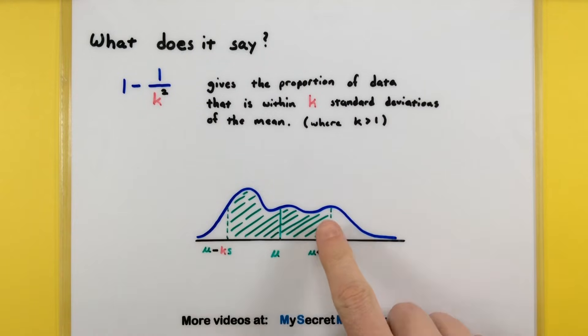So you could have some sort of distribution, doesn't have to be normal or anything like that, could be any distribution, and you're curious how much of my data falls within say two standard deviations or three standard deviations. This quick and handy formula essentially just tells you that percentage.